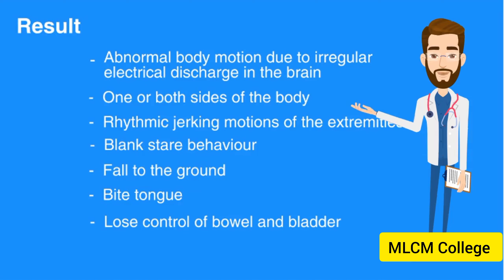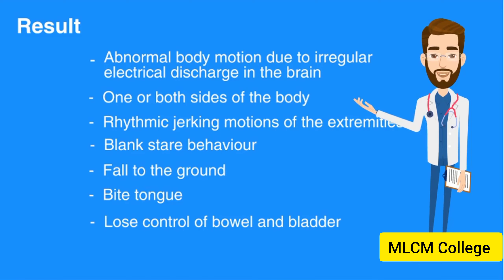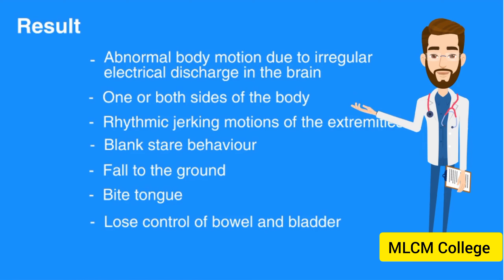Seizures result in abnormal body motion due to irregular electrical discharge in the brain. Seizures can involve one or both sides of the body. Many seizures result in rhythmic jerking motions of the extremities, but some may result in a blank stare type of behavior. An individual having a seizure may fall to the ground, bite their tongue, and lose control of their bowel and bladder. Seizures are often accompanied by a brief period of unresponsiveness.